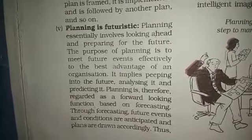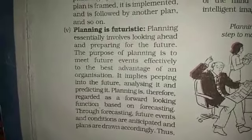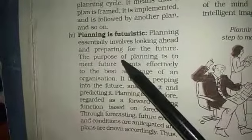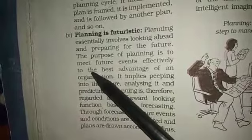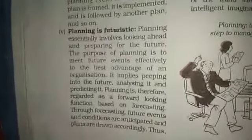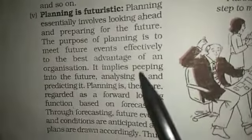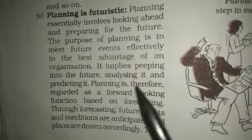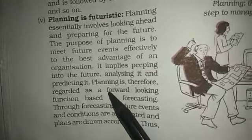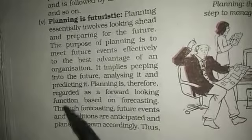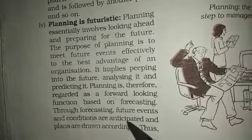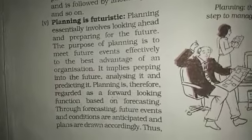The next feature is that planning is futuristic — it is done for future purposes. Planning involves looking ahead and preparing for the future. The purpose of planning is to meet future events efficiently and effectively to the best advantage of an organization. Planning is therefore regarded as a forward-looking function based on forecasting, where future events and conditions are anticipated and plans are drawn accordingly.